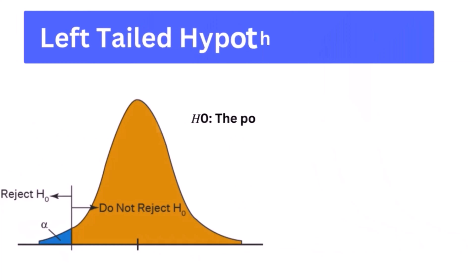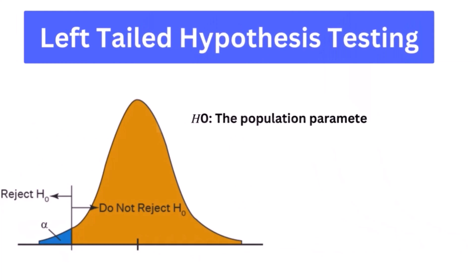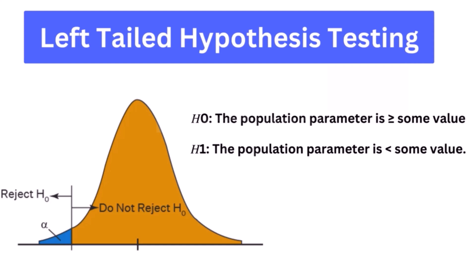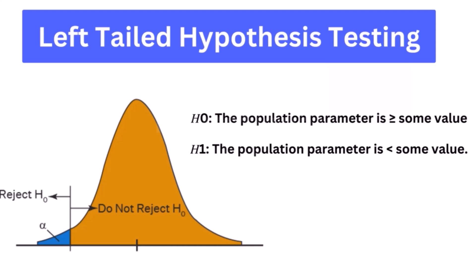Left-tailed hypothesis testing: The left-tailed test is also known as the lower-tailed test. It is used to check whether the population parameter is less than some value. The hypotheses for this test can be written as: H0 — the population parameter is greater than or equal to some value; H1 — the population parameter is less than some value. The null hypothesis is rejected if the test statistic has a value that is less than the critical value.